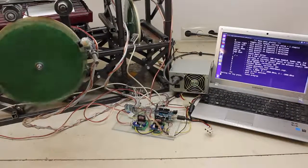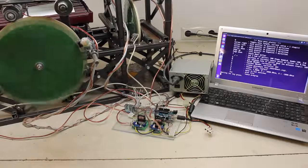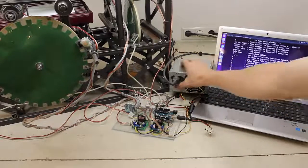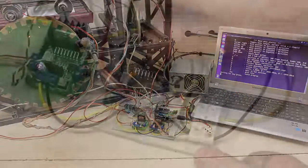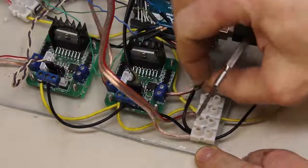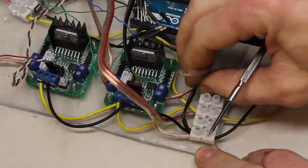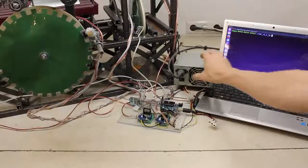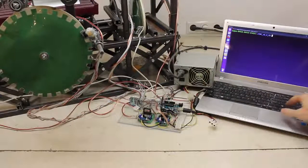If it starts spinning continuously, press the reset button on the Arduino board, turn off the voltage supply, and swap the terminals running from the accordant H-bridge to the motor.